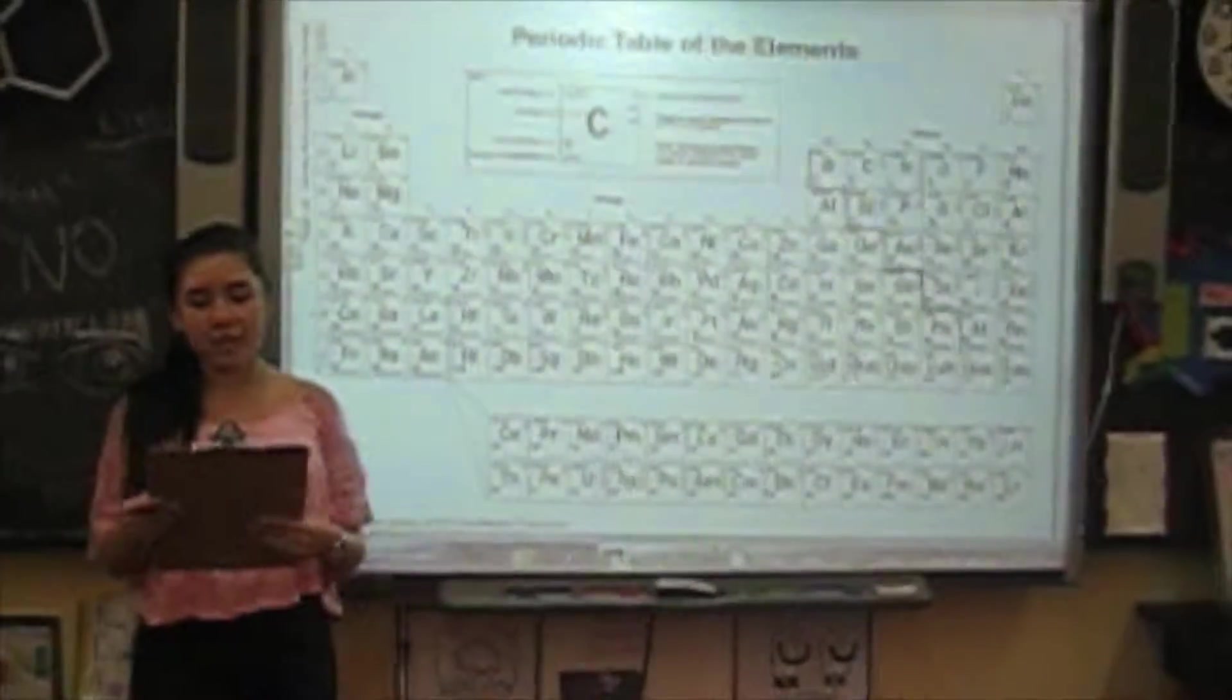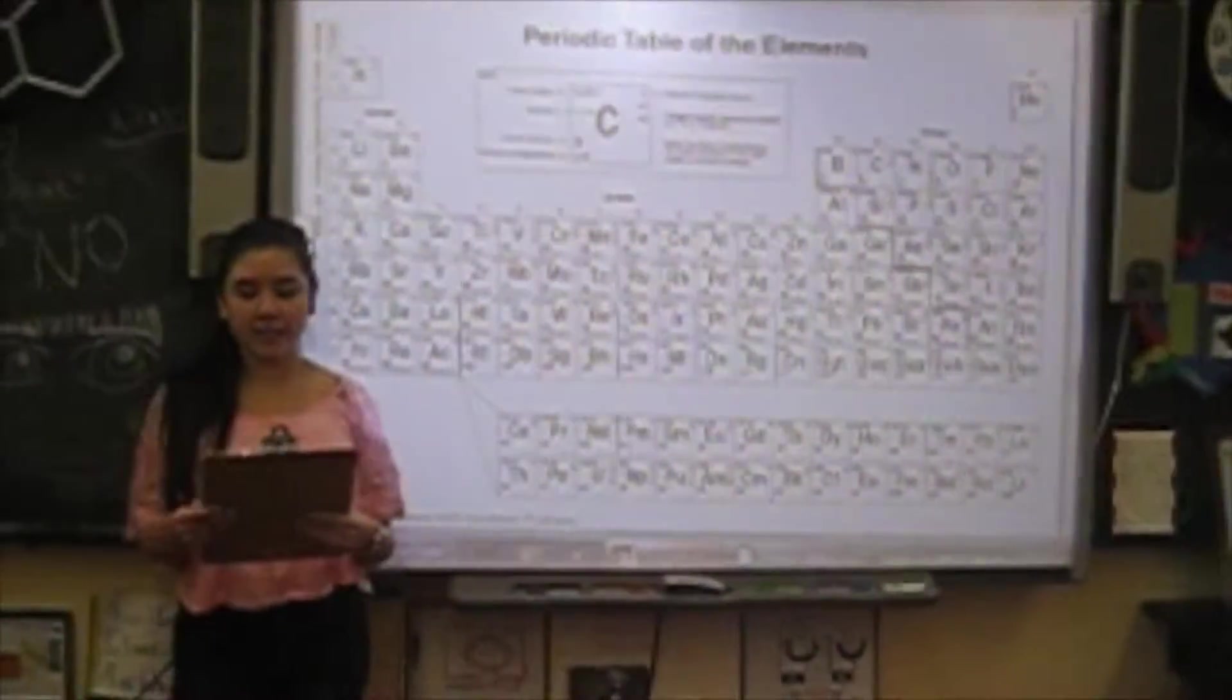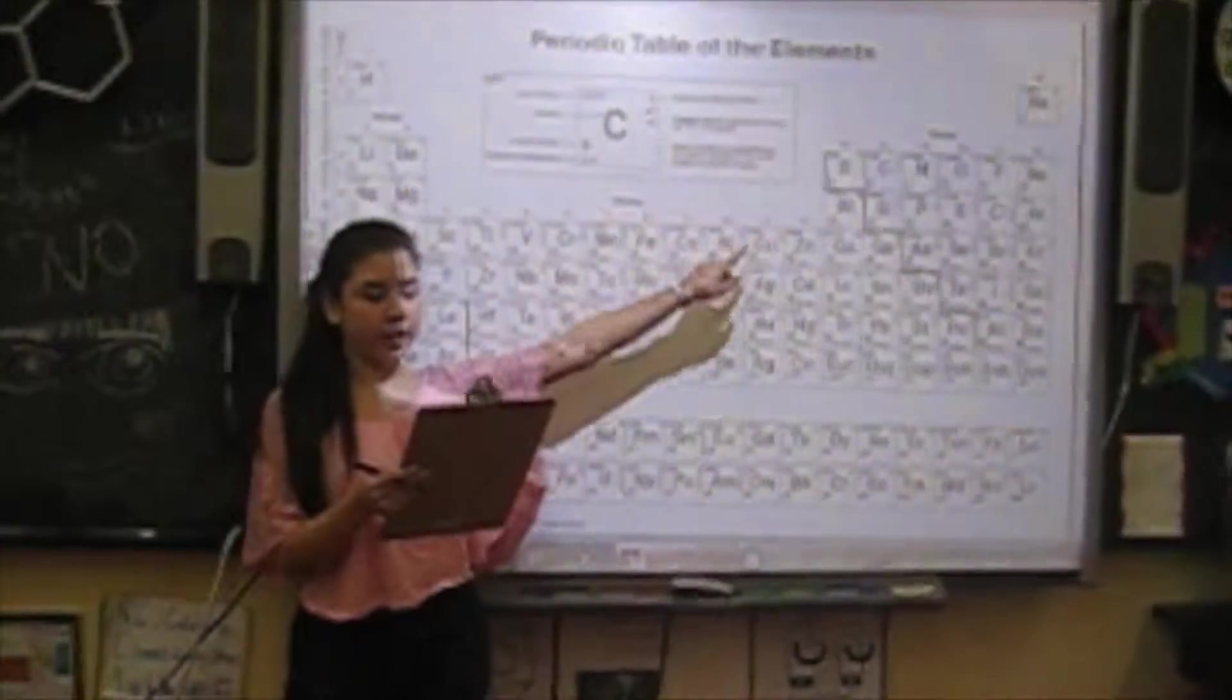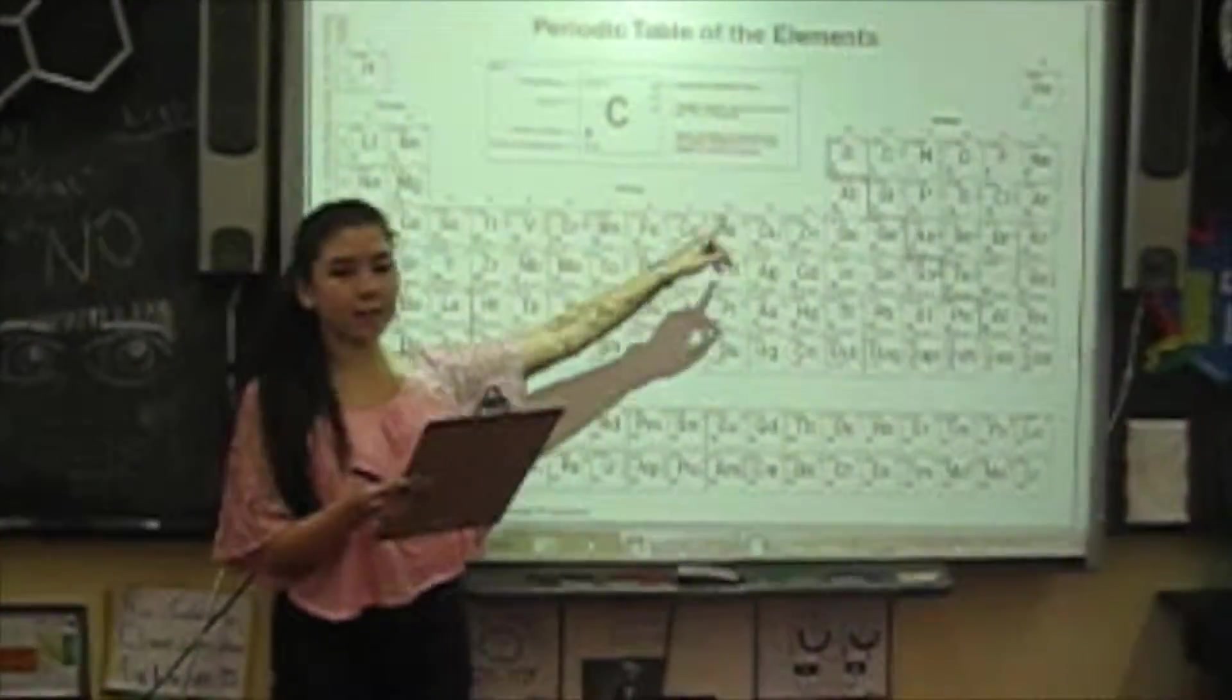Electronegativity is how much an atom wants to gain an electron. Electronegativity increases up and right on the periodic table, but it does not include group 18.